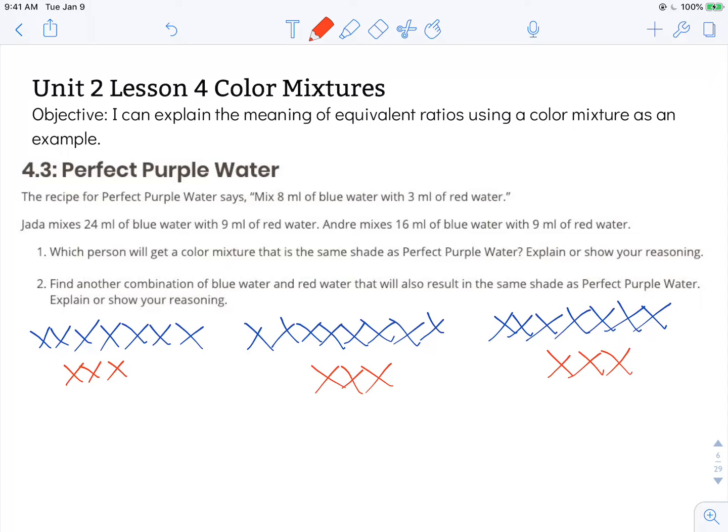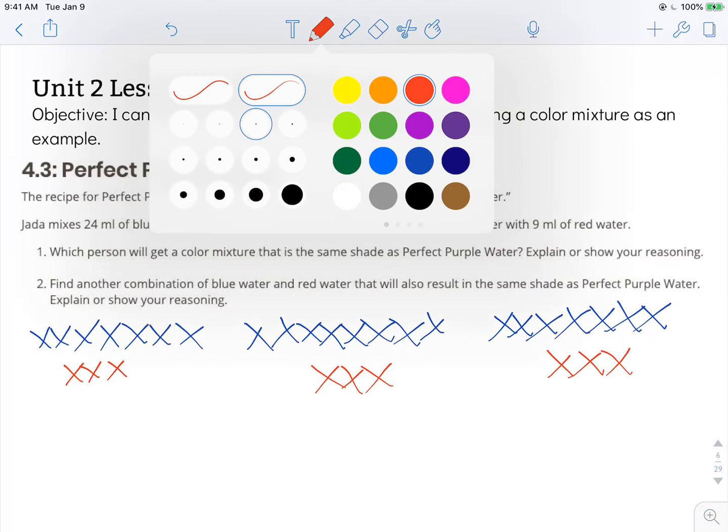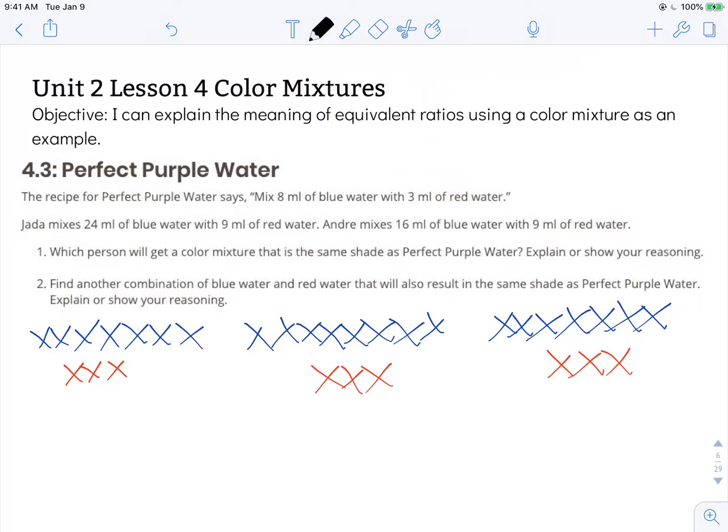Andre mixes 16 milliliters of blue water with 9 milliliters of red water. So we can see right here that we have 16 milliliters of blue water and 9 milliliters of red water.